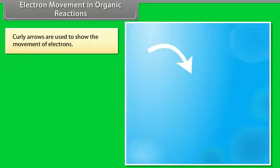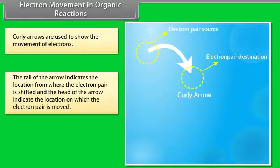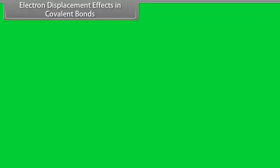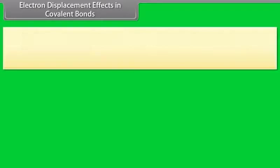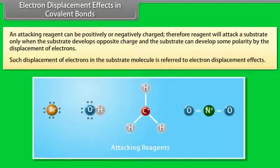Curly arrows are used to show the movement of electrons. The tail of the arrow indicates where the electron pair is shifted from, and the head indicates where the electron pair moves to. Movement of a single electron is indicated by a half-headed curved arrow. An attacking reagent can be positively or negatively charged, and will attack a substrate only when the substrate develops an opposite charge through displacement of electrons — referred to as the electron displacement effect.